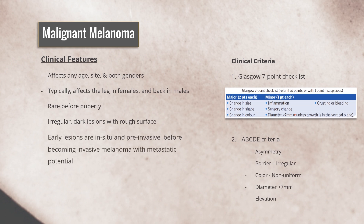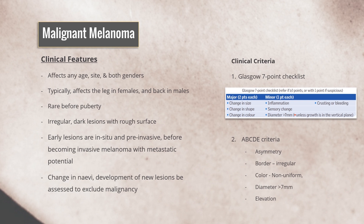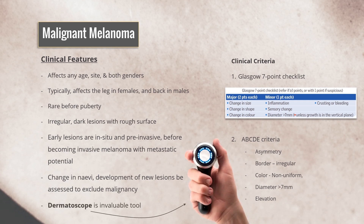Early lesions may be in situ and pre-invasive before becoming invasive melanoma with metastatic potential. Any change in nevi or development of new lesions should be assessed to exclude malignancy. A dermatoscope is an invaluable tool for this purpose. If there is any doubt, excision is advised.